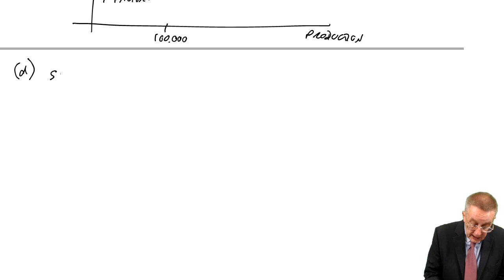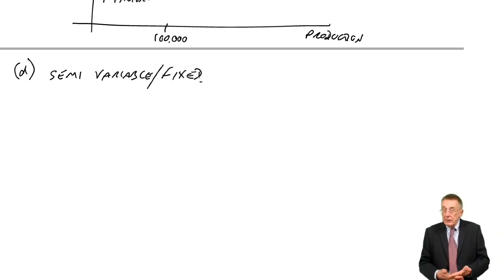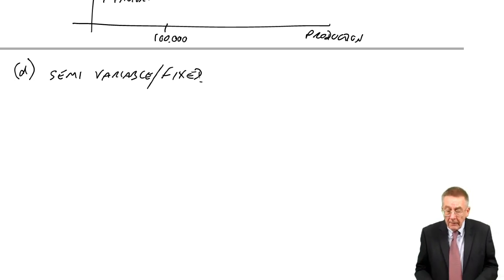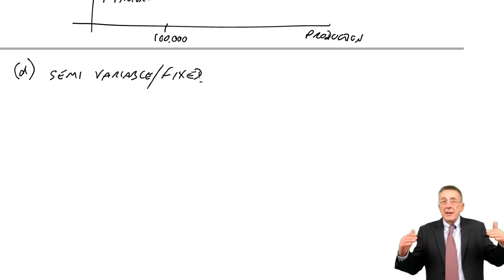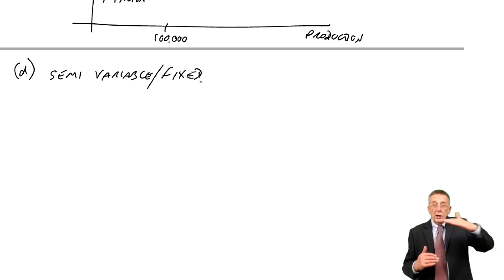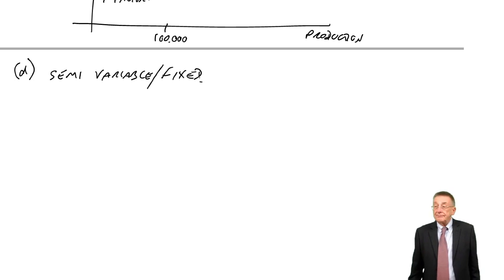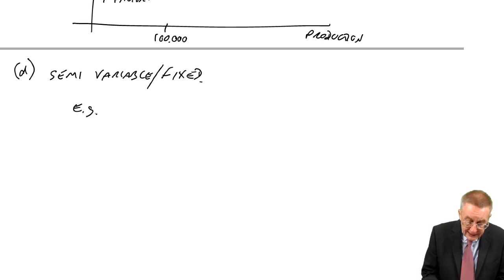Finally, semi-variable fixed. I've explained the variable cost, something like materials is variable, $5 a unit. More units, more cost. I've explained fixed cost, something like the rent of the factory. Total cost is fixed whatever the production. But a lot of costs are a combination of the two.